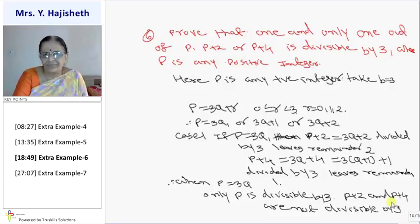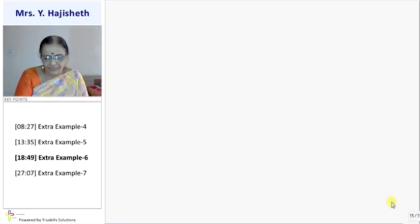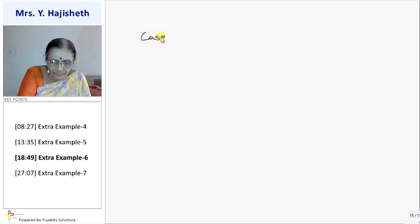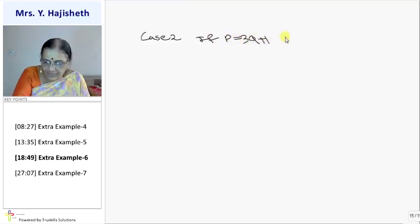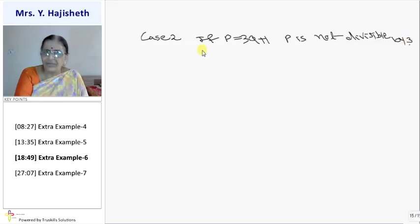Now case 2. If p is 3q plus 1, then p is not divisible by 3. Why? Because when 3q plus 1 is divided by 3, it leaves remainder 1.